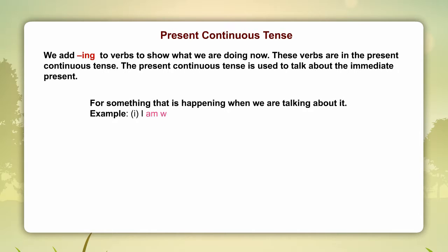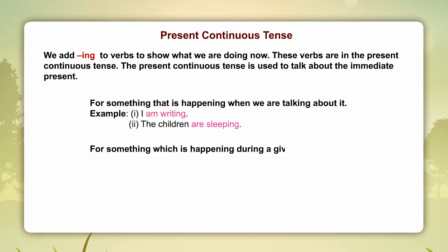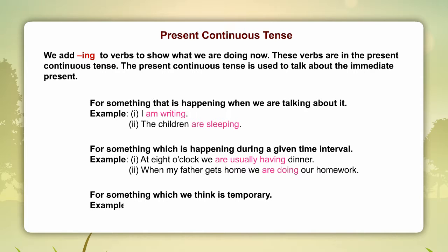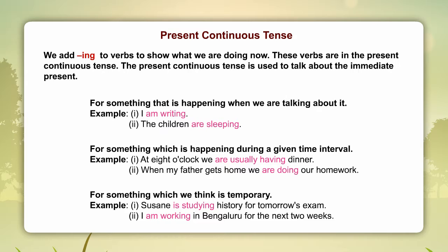Examples: I am writing. The children are sleeping. For something which is happening during a given time interval — examples: At 8 o'clock, we are usually having dinner. When my father gets home, we are doing our homework. For something which we think is temporary — examples: Suzanne is studying history for tomorrow's exam. I am working in Bengaluru for the next two weeks.